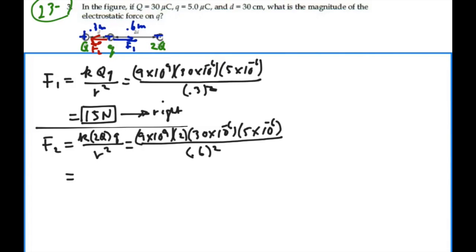So we have 9 times 10 to the 9 times 2 times 30 microcoulombs times 5 microcoulombs divided by 0.6 squared, gives us 7.5 newtons. And that force is to the left.